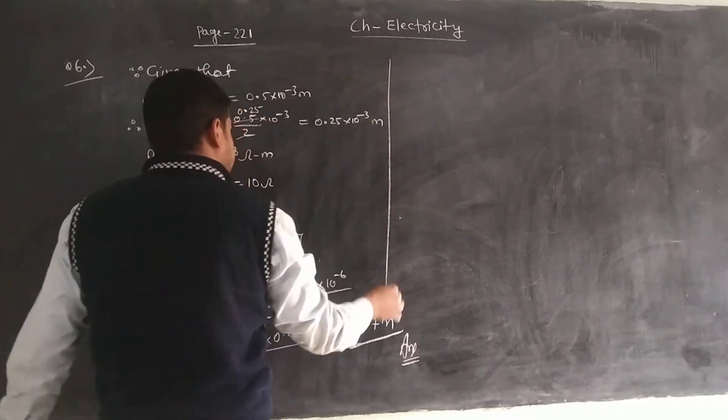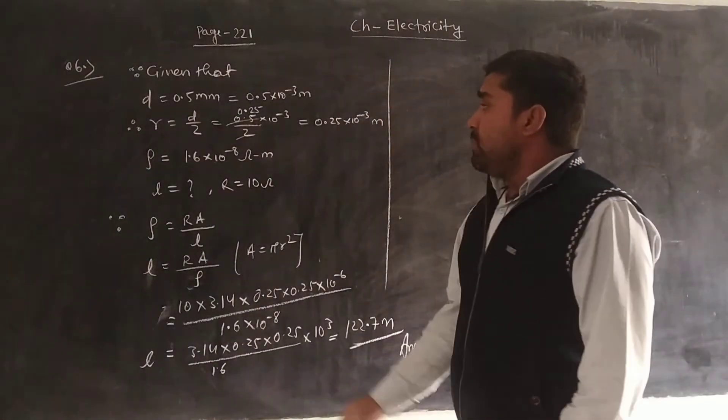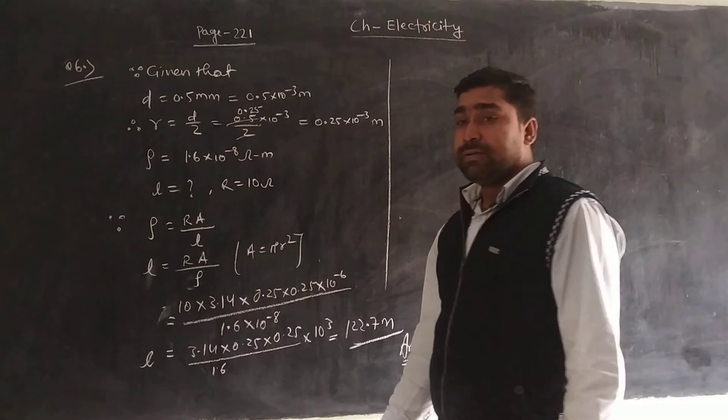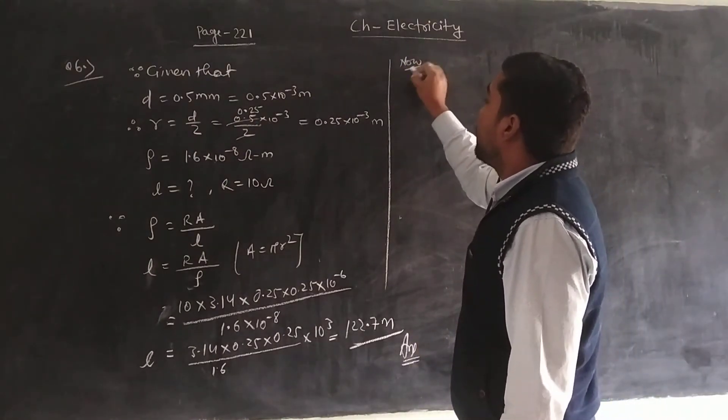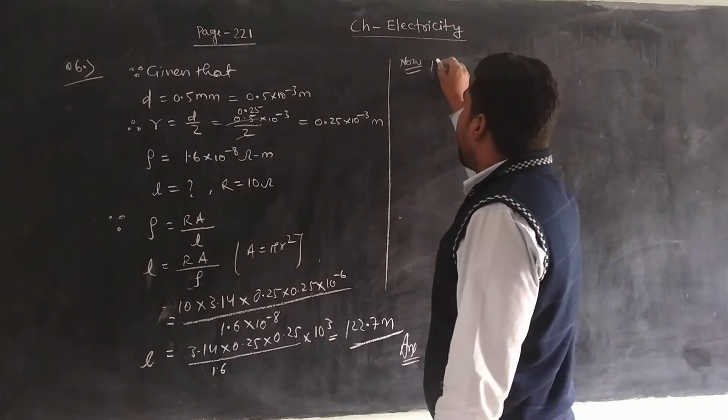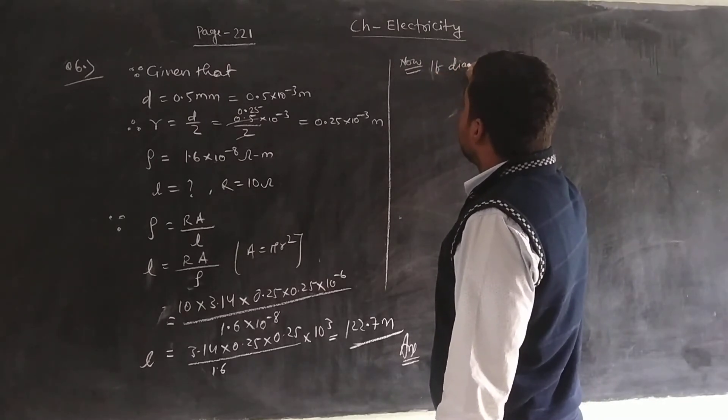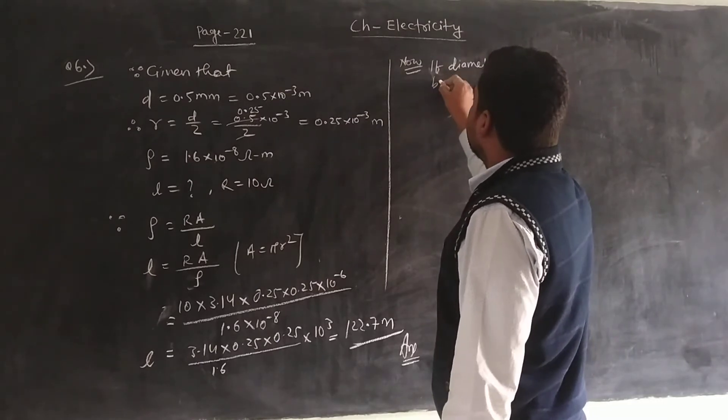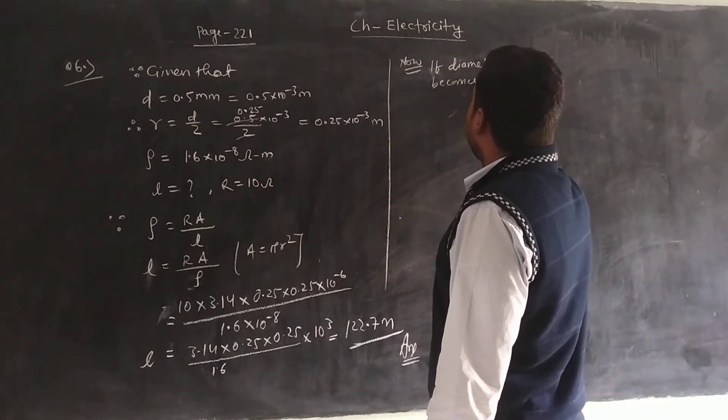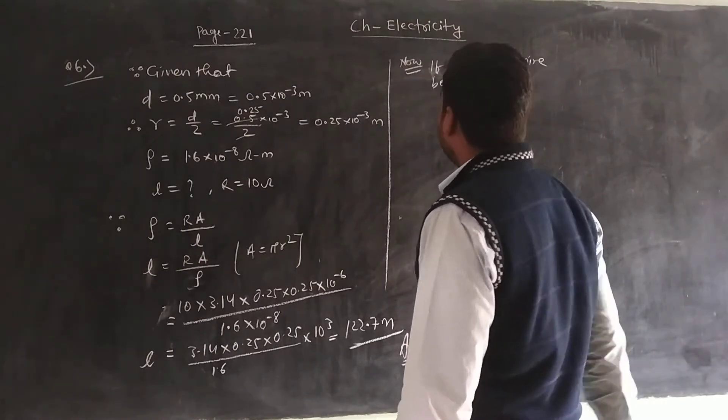Now we have one more question. If we double the diameter, then what will be the resistance change? Now we are saying if diameter of wire becomes 2 times the original.